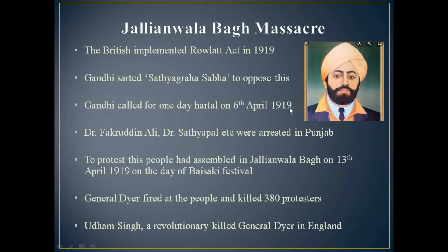Against the Rowlatt Act, Gandhiji started the Satyagraha Sabha. He called for a one-day hartal on 6th April 1919. Dr. Fakruddin Ali, Dr. Satyapal, and others were arrested in Punjab. To protest this, people assembled in Jallianwala Bagh on 13th April 1919, on the day of the Baisakhi festival — a big festival there, much like Vishu and Sankramana in Kerala.